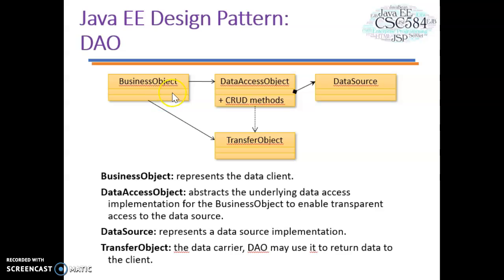The DAO pattern adapts a specific data resource access API to a generic client interface. It allows data access mechanisms to change independently of the code that uses the data. In this class diagram, we can see the relationship for the DAO pattern. We have a business object that represents the data client, and a data access object that abstracts the underlying data access implementation for the business object to enable transparent access to the data source. It contains the CRUD methods: create, read, update, and delete.